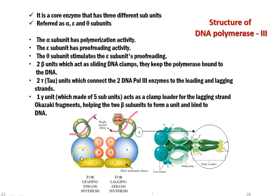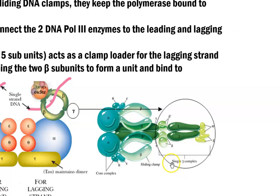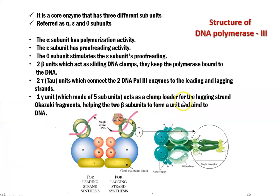These tau subunits are shown in the diagram — one is with the leading strand, another is with the lagging strand. The last component is one gamma unit, which is made up of five subunits. A single gamma complex houses five subunits. It acts as a clamp loader for the lagging strand, especially where Okazaki fragments are synthesized. It also helps the two beta subunits to form into a unit and bind to the DNA molecule.